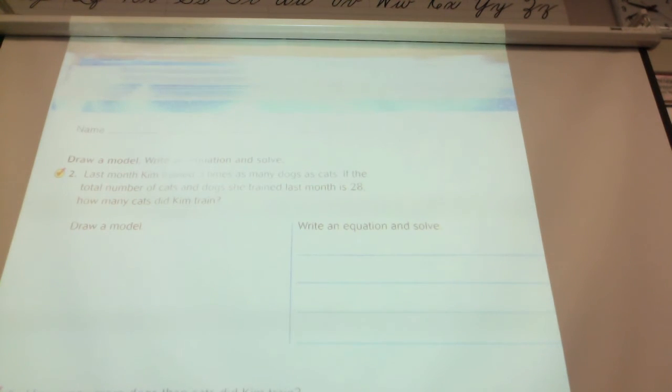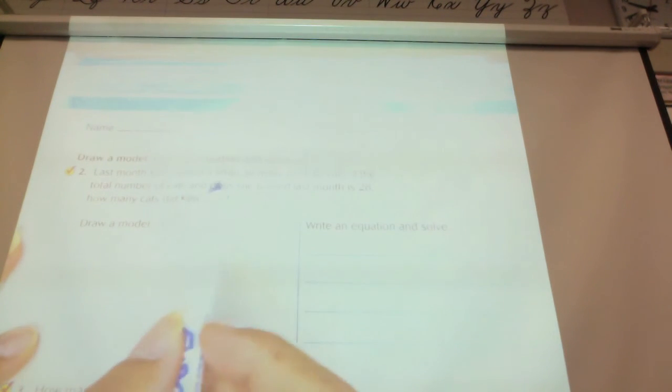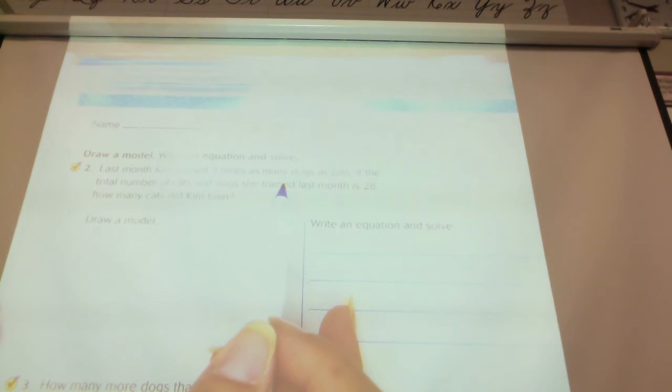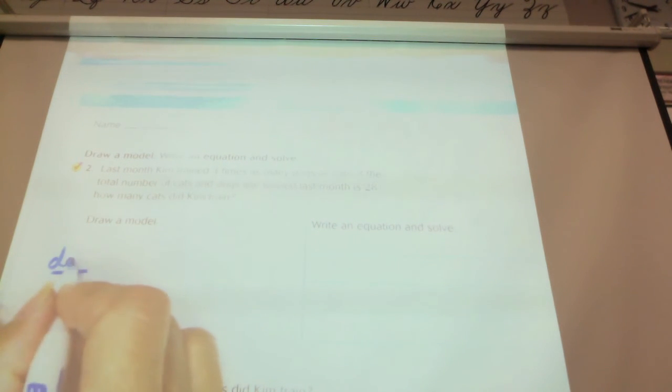Last month, Kim trained three times as many dogs as cats. If the total number of cats and dogs she trained last month is 28, how many cats did she train? So let's go and draw our model. I'm going to look back up my problem. We have dogs and cats. Now we're comparing three times as many dogs as there were cats. So what is going to be my first one? Dogs. Dogs, because there's more dogs.